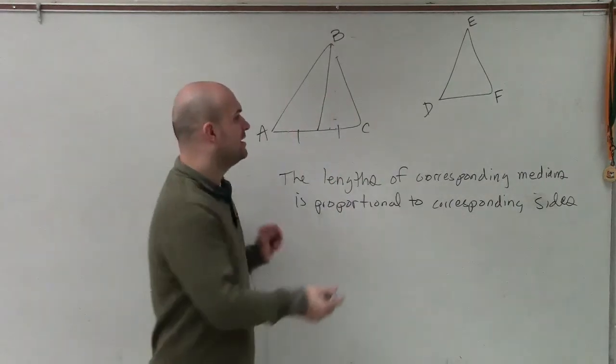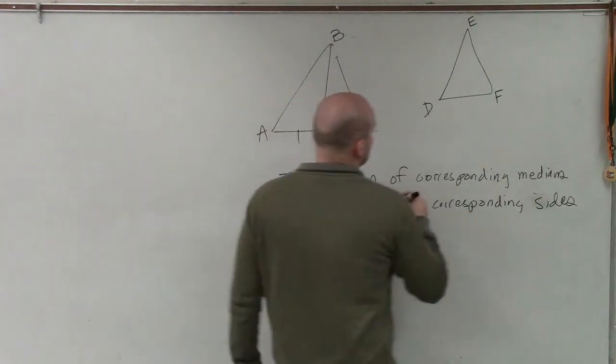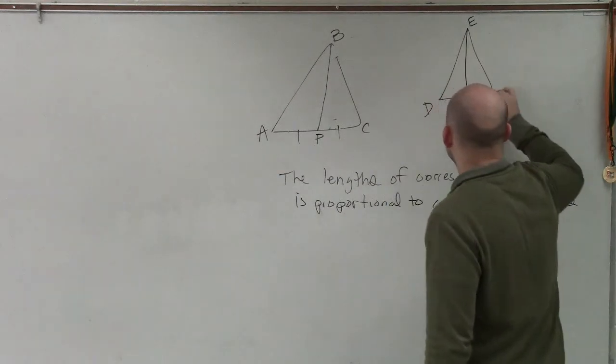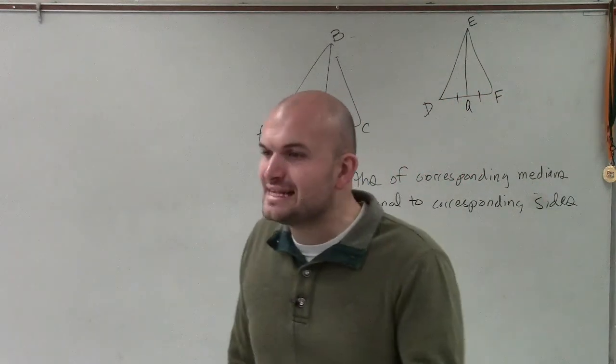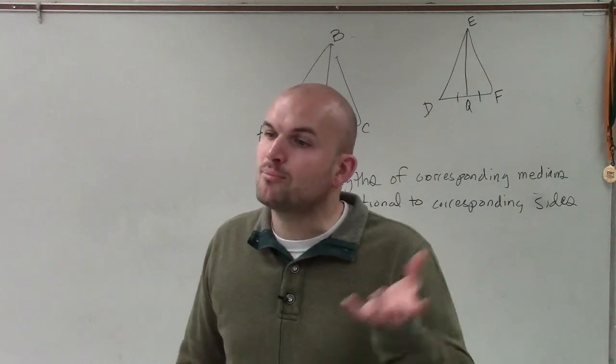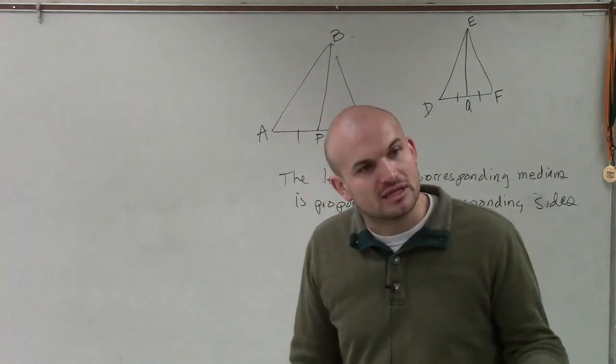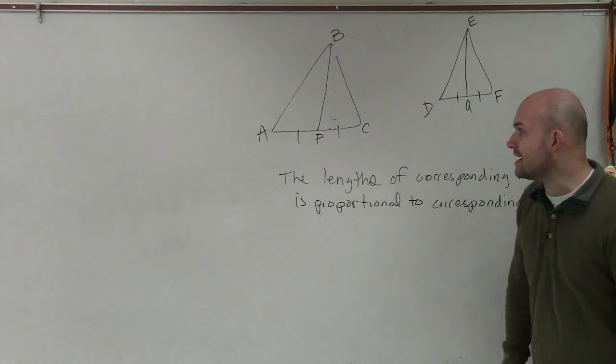And therefore, Malik, if we find the median for two similar triangles, we can say the length of that median is proportional to the lengths of the sides of your similar triangles.